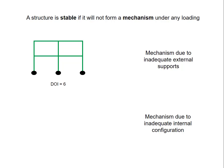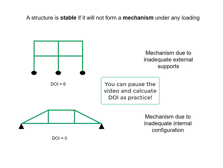The other kind of instability is due to an inadequate internal configuration. Consider the truss here. If you were to calculate based on the equations in previous videos, you would calculate that DOI is zero. This would mean that it's statically determinate. However, the configuration of the internal members is not stable. And this is the mechanism that the truss can form.